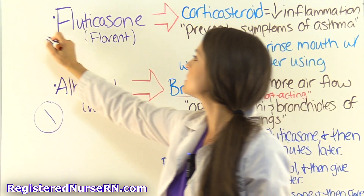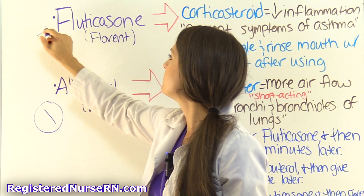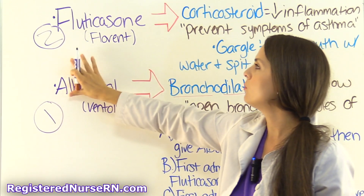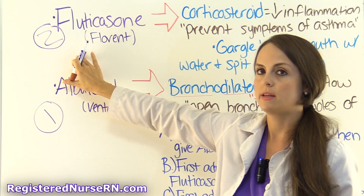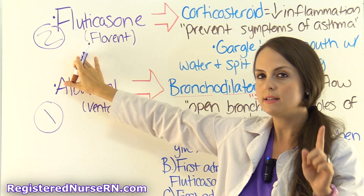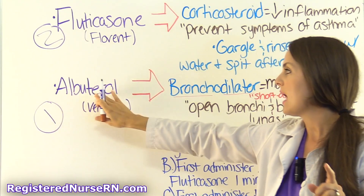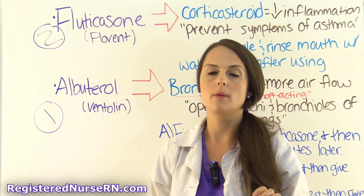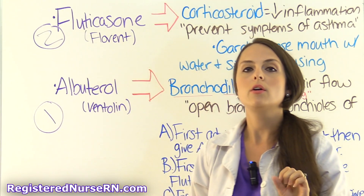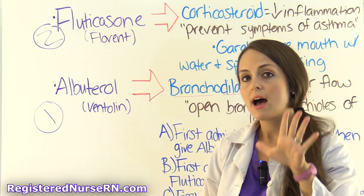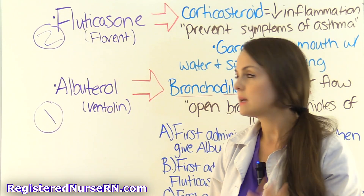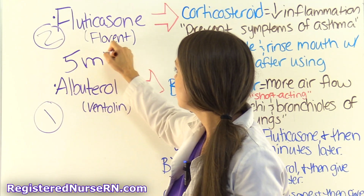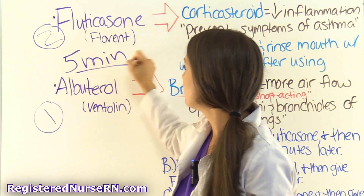So we'll give the corticosteroid second. But how long do we need to wait in between? We need to give the albuterol time to work and do its job, so we're going to wait five minutes in between those two doses.